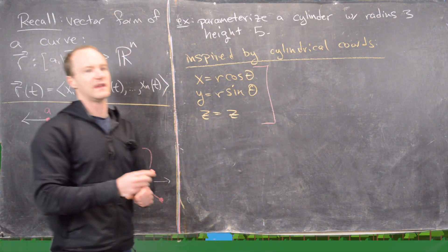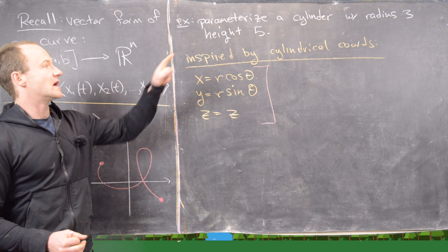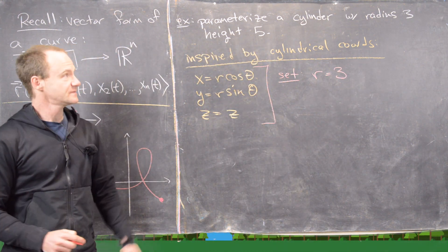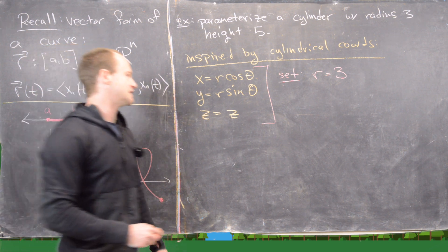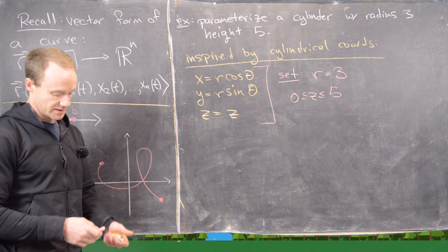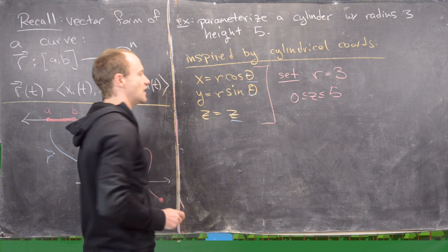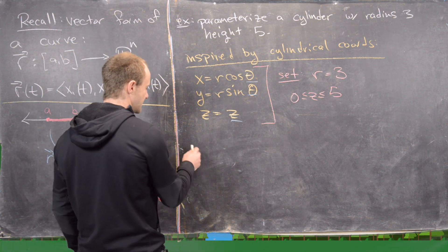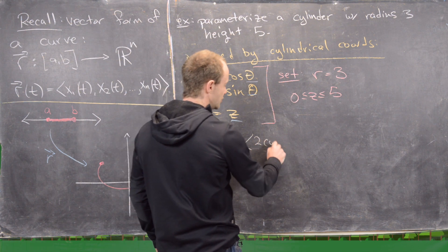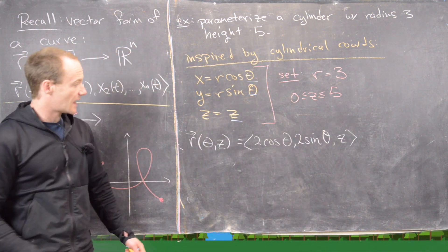But here we don't want the entire 3-space. Cylindrical coordinates will give us the entire 3-space. We want to fix in on a cylinder with radius 3. So that means we want to set the radius equal to 3 at all times. And furthermore, we want the height to be 5. So that means we might as well take z going from 0 to 5. So now what is left as our variable? So now r is no longer a variable, but theta and z are variables. So let's see what we've got going on here. We can write this down pretty easily. So we have r of theta comma z equals, so that's going to give us 3 cosine theta, 3 sine theta, comma z.